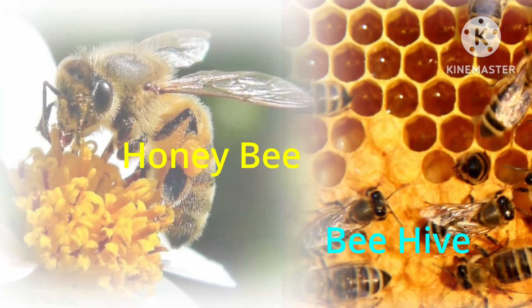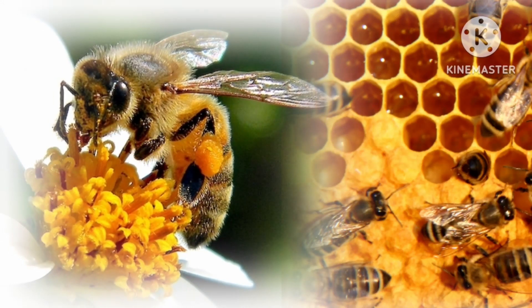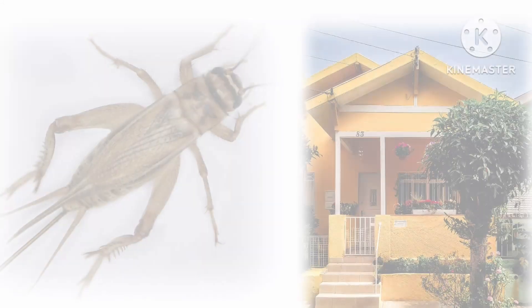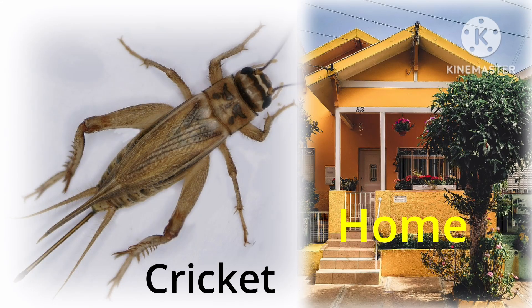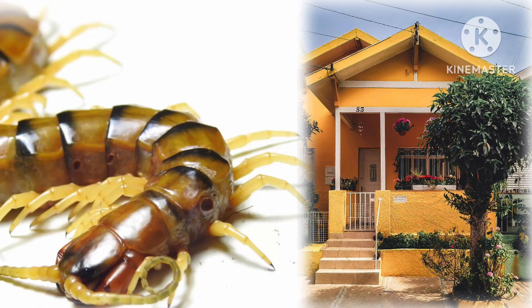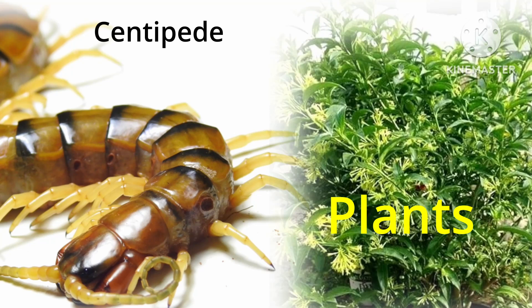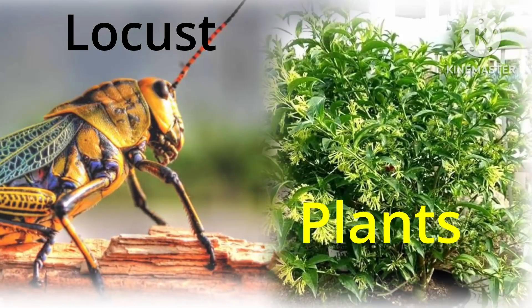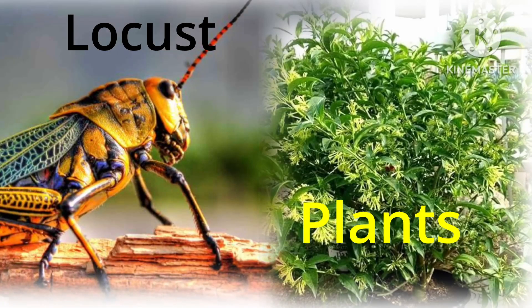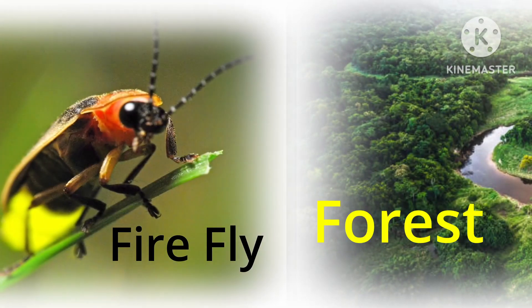Honeybee lives in its beehive. Cricket lives in our homes. Centipede lives near plants. Locusts live on plants. Firefly lives in forests.